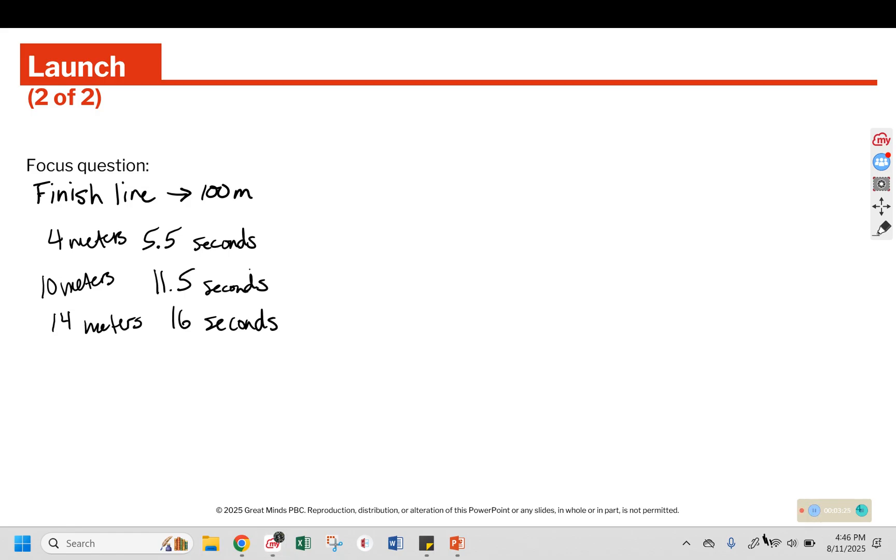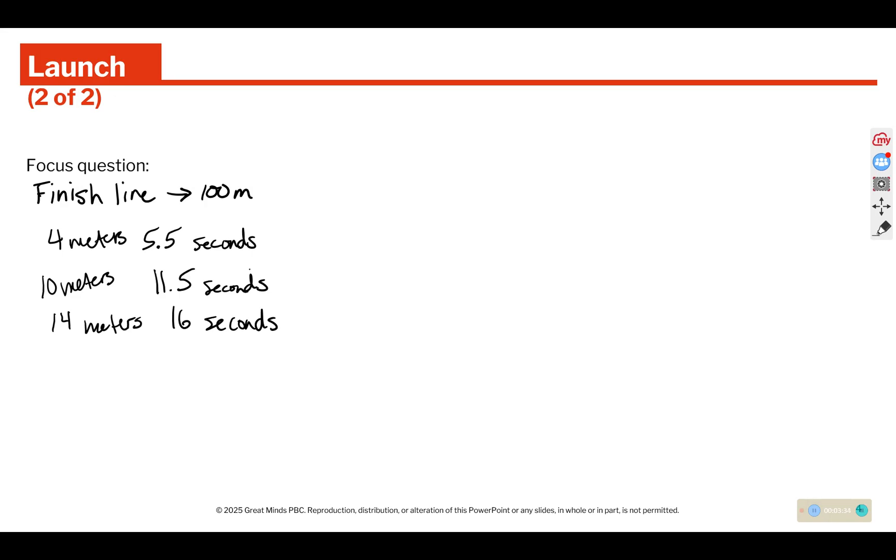So now we have data collected that the finish line is at 100 meters and some different intervals of time. We can start by trying to figure out how fast this person is going. Their speed would be measured in meters per second. That tells us that we take the meters and we divide by the seconds.